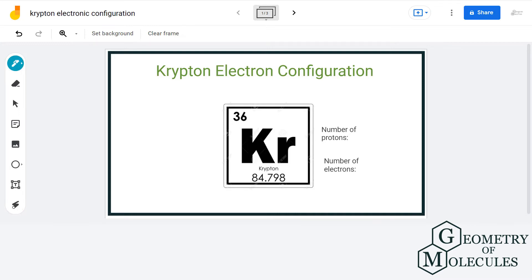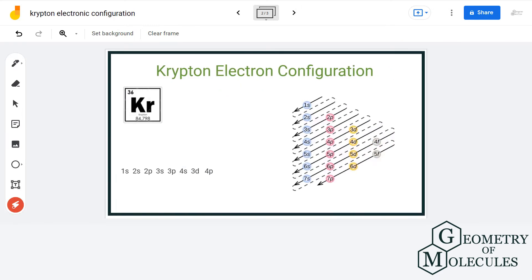Krypton has atomic number of 36, which means that it has a total of 36 protons and 36 electrons. Now as we have determined the total number of electrons, we will start arranging the electrons based on the chart given here.